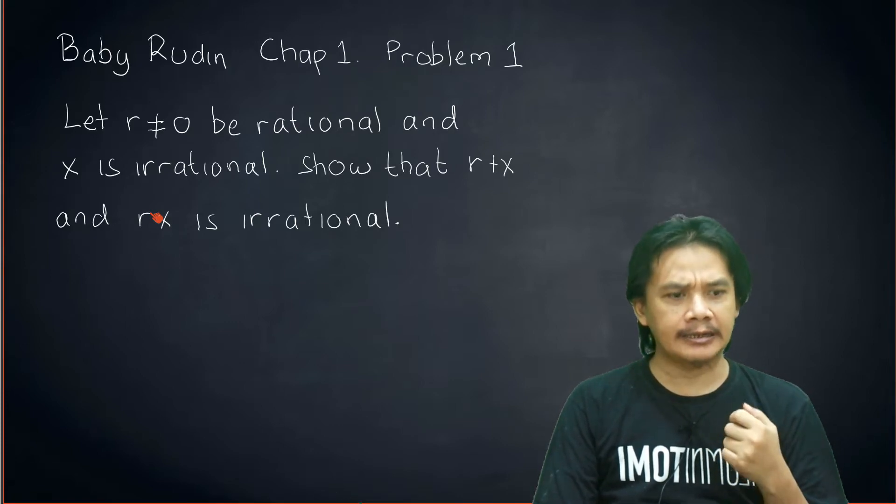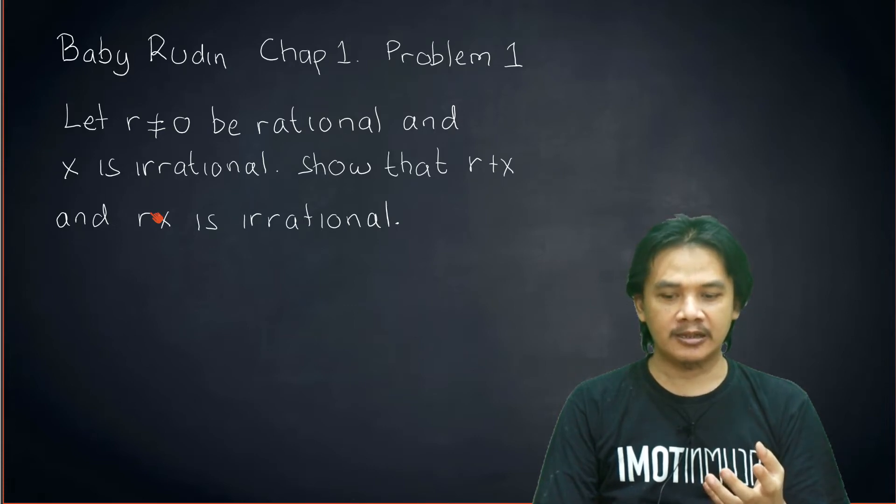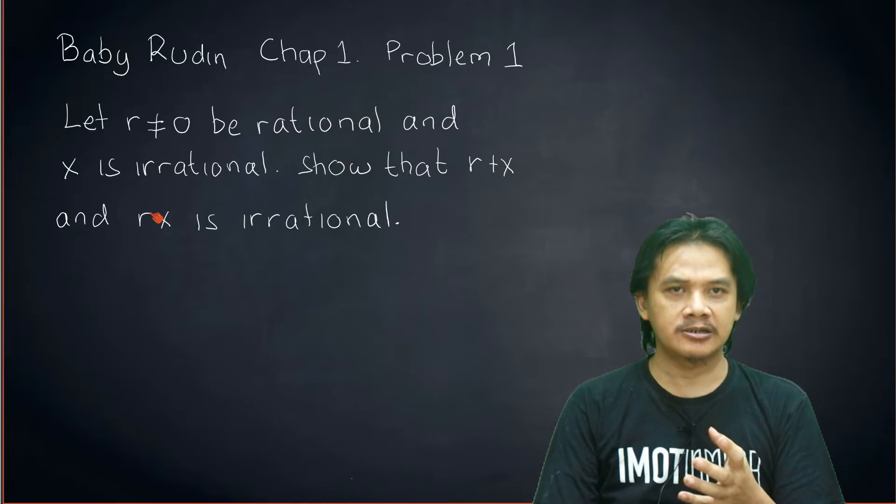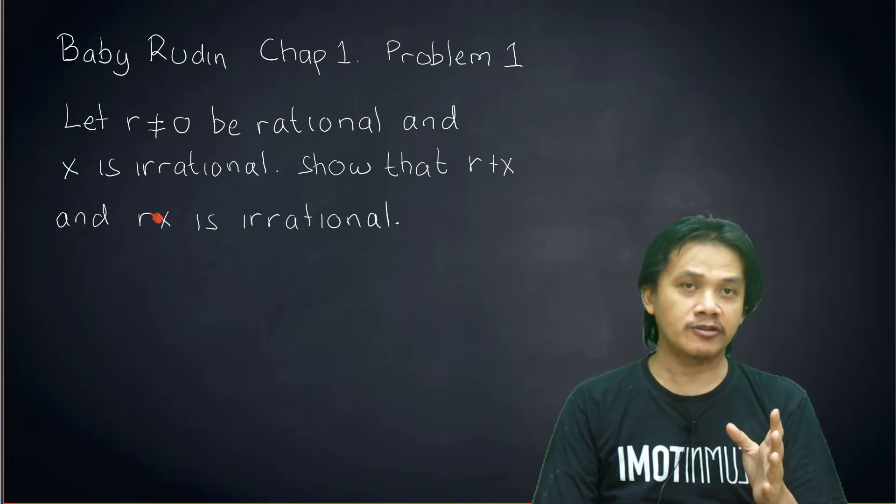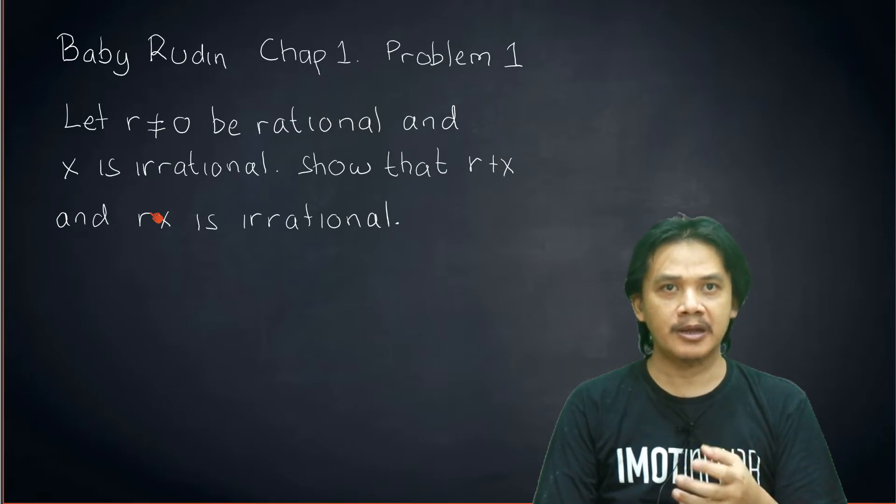Recall that the way we define irrational number is irrational is the negation of being rational. So an irrational number has no particular shape. Because of that, we will argue this problem by using contradiction.